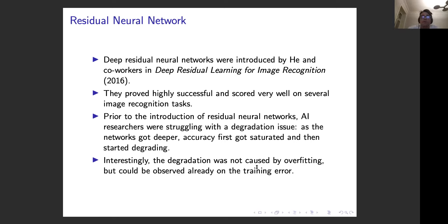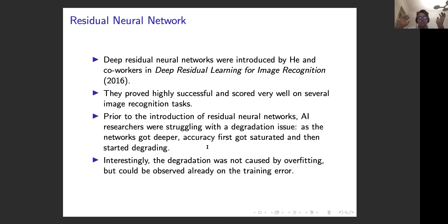Interestingly, this degradation was not simply caused by overfitting. Even on the training error you could see this degradation — you're making the network more and more complicated, and you'd assume you can approximate the training data perfectly, but the training error itself was getting worse. What He et al. showed is that if you use deep residual networks you avoid this degradation issue.